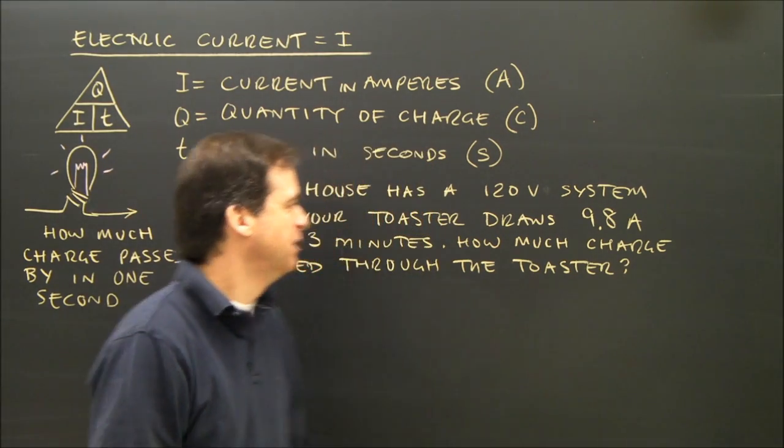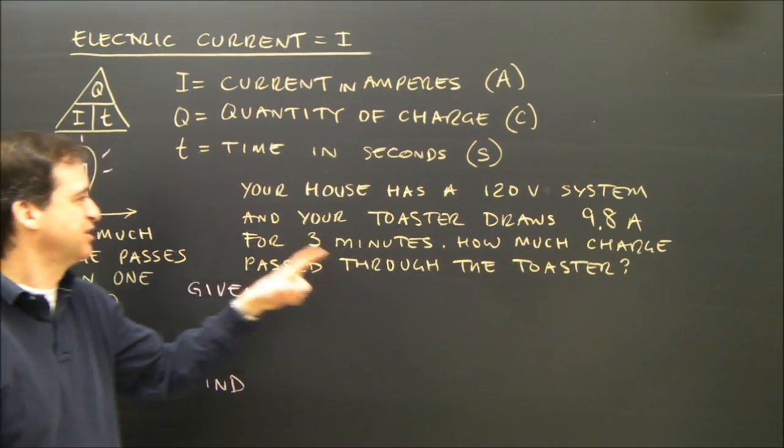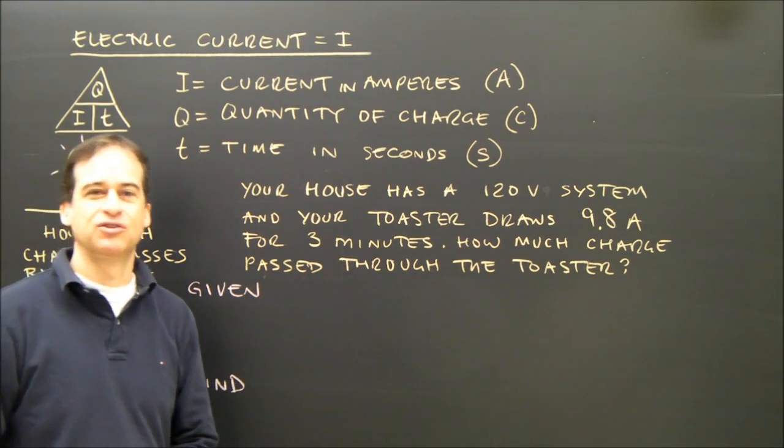So let's try a simple problem that's quite an easy formula to use. Your house has a 120 volt system, and your toaster draws 9.8 amperes for 3 minutes. How much charge passes through the toaster?